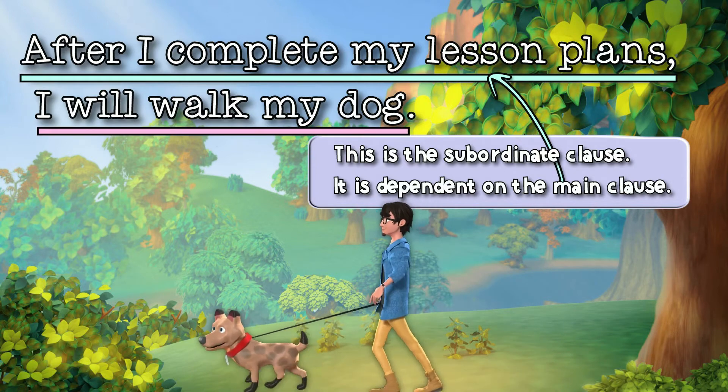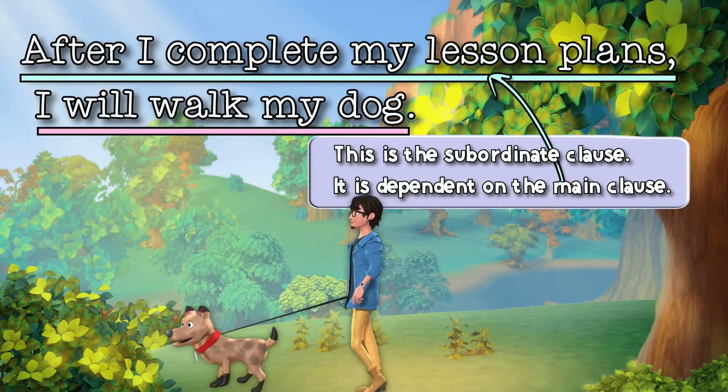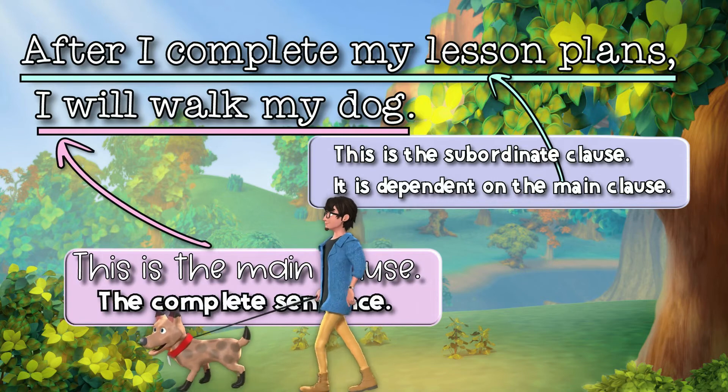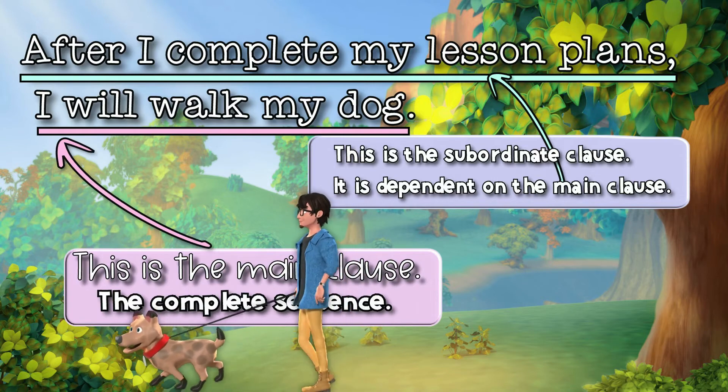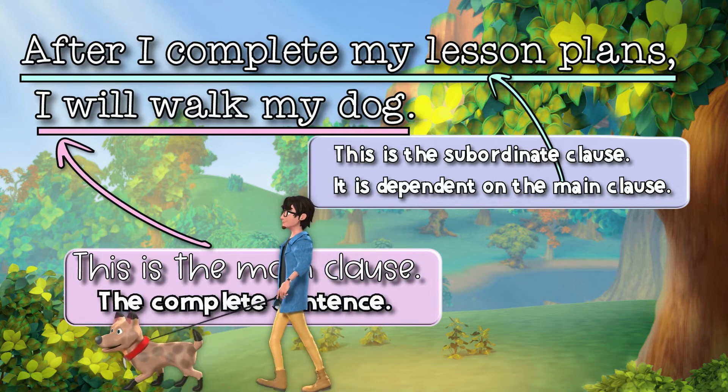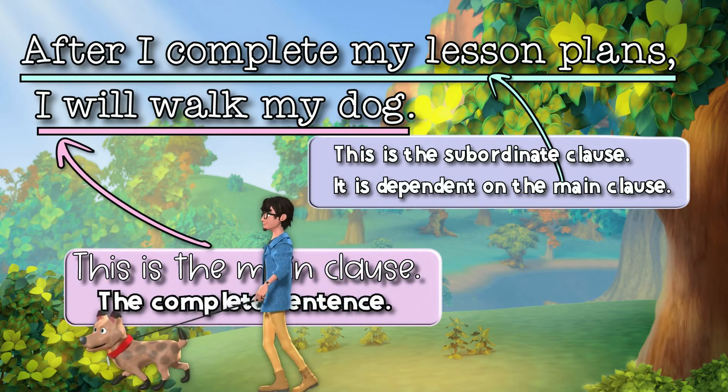'I will walk my dog' is the main clause, because it makes sense on its own. It is a complete sentence with a subject and a verb.